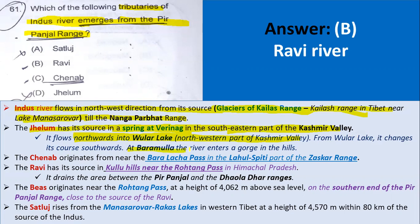From Wular Lake, Jhelam changes its course southwards. At Baramulla, the river enters a gorge in the hills. The Chenab River originates near the Baralacha Pass in the Lahaul-Spiti part of the Zaskar Range — Indus River passes between Ladakh and the Zaskar Range. Ravi has its source in the Kullu Hills near the Rotang Pass in Himachal Pradesh. It drains the area between the Pir Panjal and the Dhaula Dhar Range. Beas also originates near the Rotang Pass, close to the source of Ravi — so both Beas and Ravi come from the Pir Panjal Range.